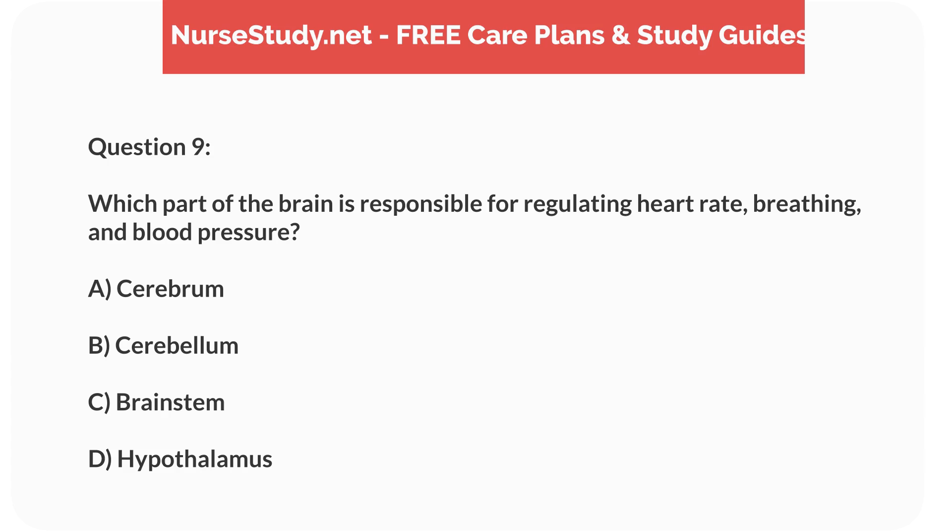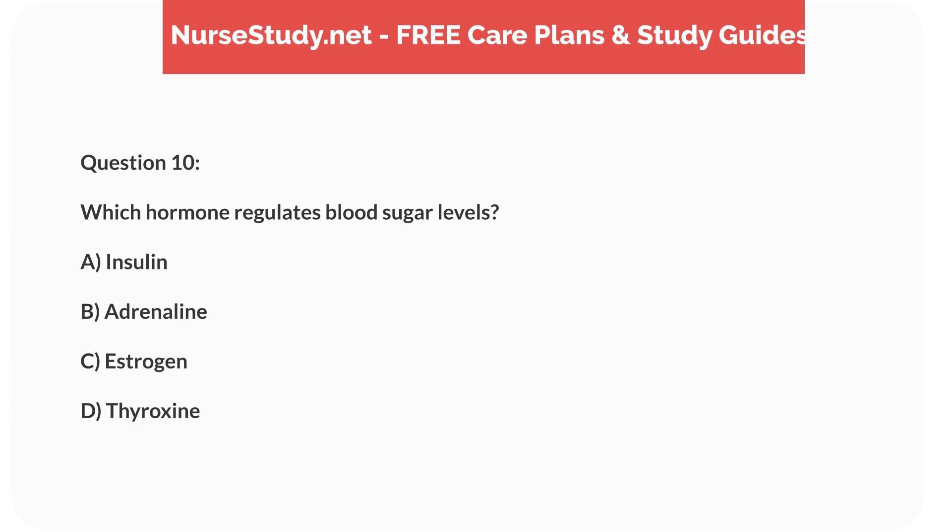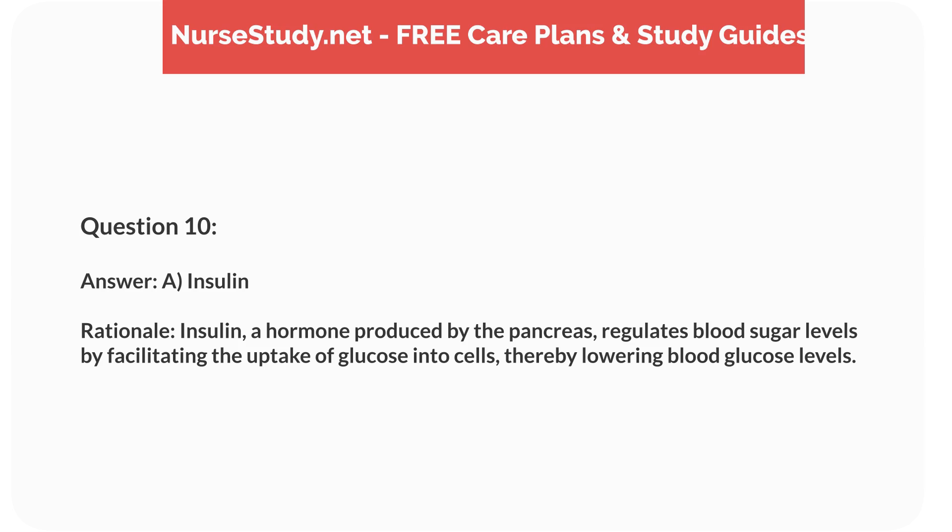A) cerebrum, B) cerebellum, C) brainstem, D) hypothalamus. Answer: C, brainstem. Rationale: The brainstem regulates vital functions including heart rate, breathing, and blood pressure. It acts as a relay center connecting the cerebrum and cerebellum to the spinal cord. Question 10: Which hormone regulates blood sugar levels? A) insulin, B) adrenaline, C) estrogen, D) thyroxine. Answer: A, insulin.